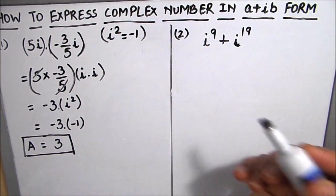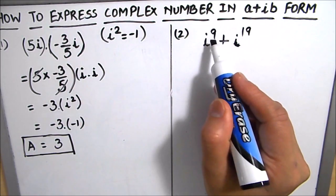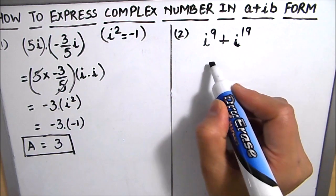So in this example our main purpose is to replace iota to the power 9 in terms of i square.